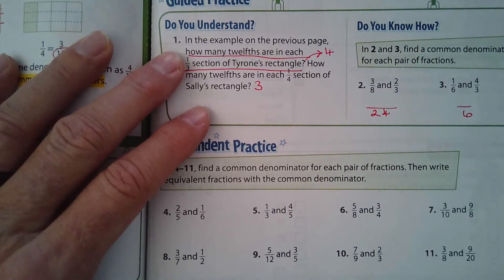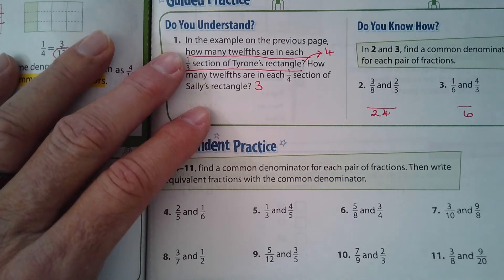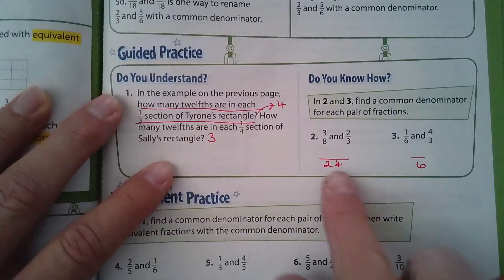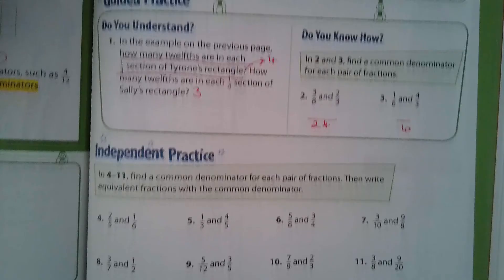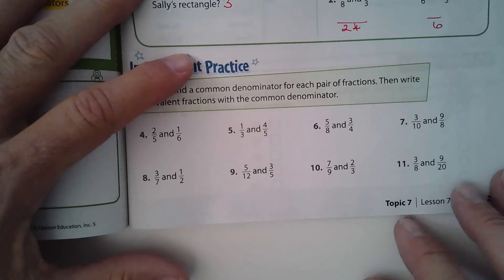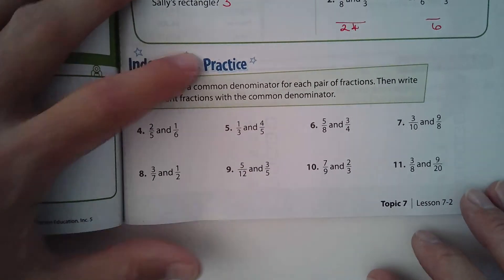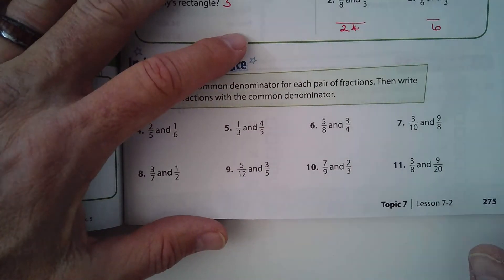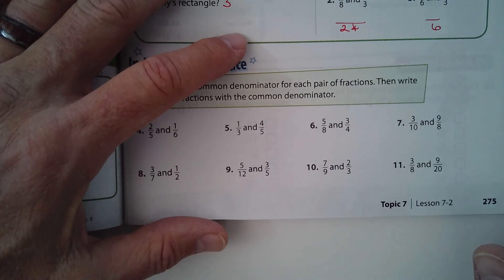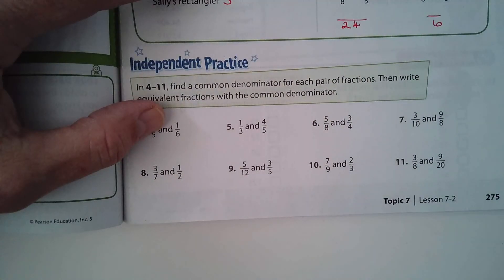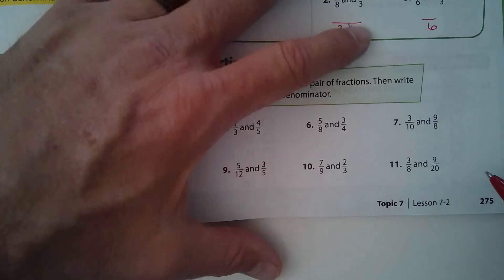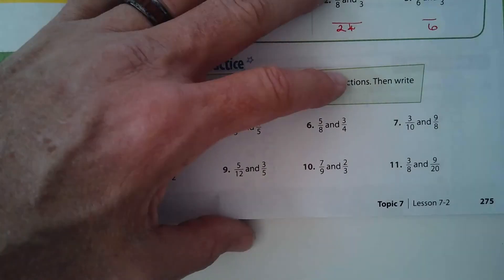Some of these problems should look familiar. I want you guys to do the remaining problems at the bottom of this page. Some are pretty obvious, others will be a little harder and you'll need to multiply the two denominators together to get a common denominator. Okay, let's look at the next page.